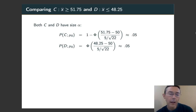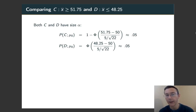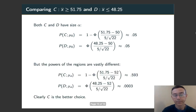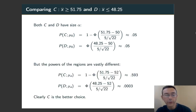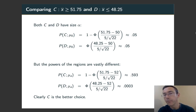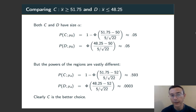Under the null hypothesis, the probability of points landing in C and D are the same — both 5%. So these are both critical regions of size 0.05. Let's compute statistical power assuming mu is 52, assuming the alternative hypothesis. The probability of a point landing in C given the alternative hypothesis is 0.59 — a statistical power of almost 60%. On the other hand, assuming the alternative hypothesis mu equals 52, the probability of a point landing in D is only 0.0003. Clearly, C is the much better choice here.